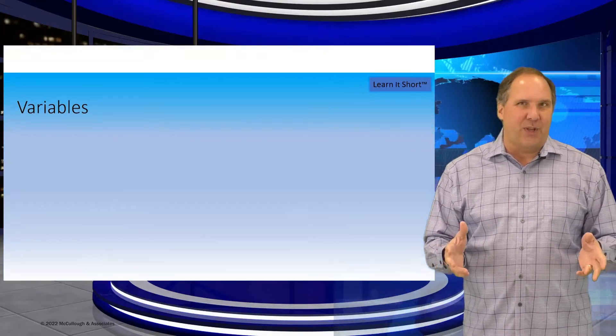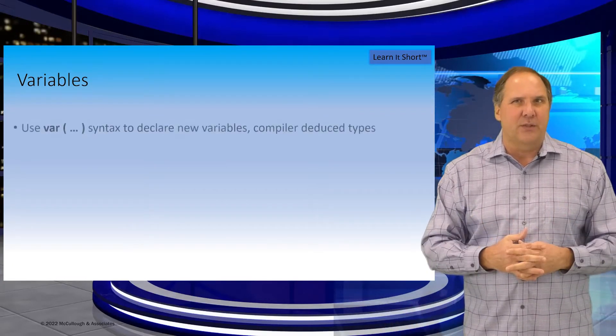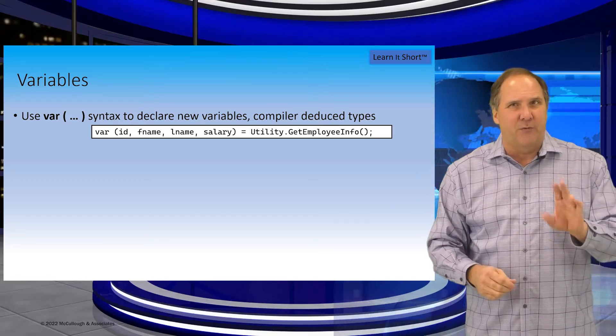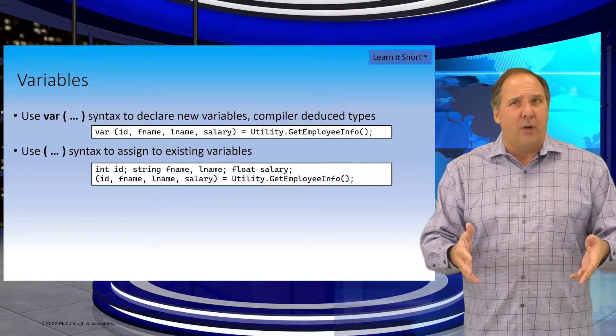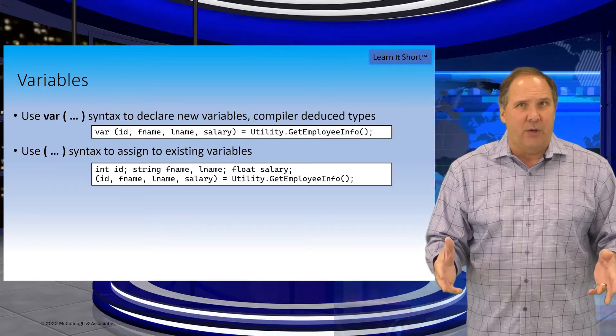There are several ways to assign objects to variables. In all cases, the variable list is inside parentheses, and the most common syntax is var, followed by the list of variable names. Omit the var keyword to assign to variables that you've already declared earlier in code.